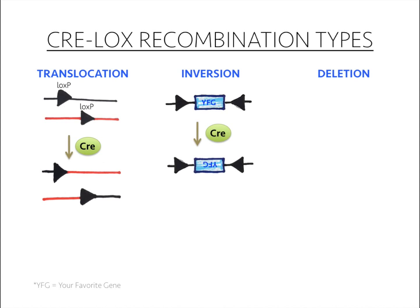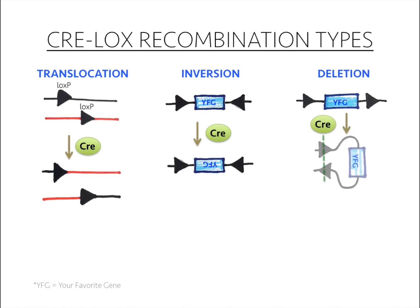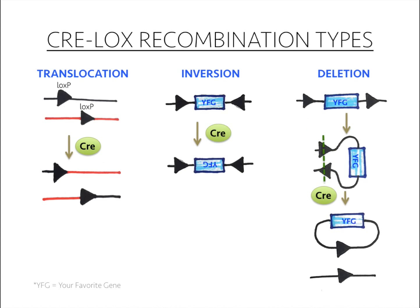Deletion is the most commonly used. The LoxP sites point the same direction and flank a targeted gene. Cre causes a recombination between the LoxP sites and ends up deleting the target gene from the genomic sequence, leaving behind one LoxP site in the genome. Deleting the target gene is called floxing the gene.